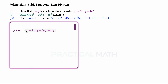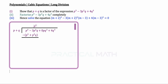First, we want to get rid of p cubed. To do so, we multiply by p squared. So p squared multiplied by p gives us p cubed, and p squared multiplied by q gives us p squared q. Taking p cubed minus p cubed, the p cubed is now gone. Then negative 3p squared q minus p squared q gives us negative 4p squared q.